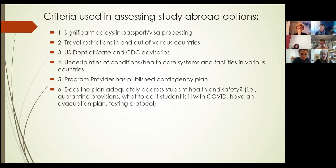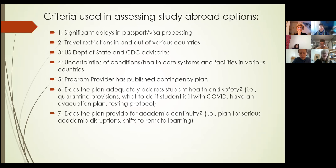How are we handling student health and safety? We have gone over and over our quarantine provisions and what to do if a student is ill with COVID — do we have an evacuation plan, testing protocol, and so on. There's also the plan for academic continuity: are we starting in a kind of remote or enhanced remote mode and then going in person, or vice versa? Do we have the flexibility to move between those modes of instruction?